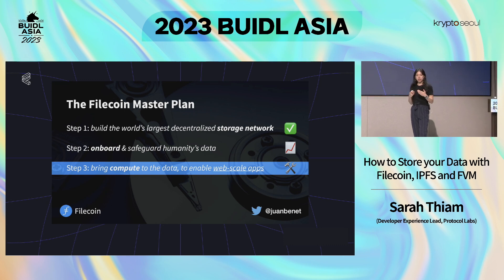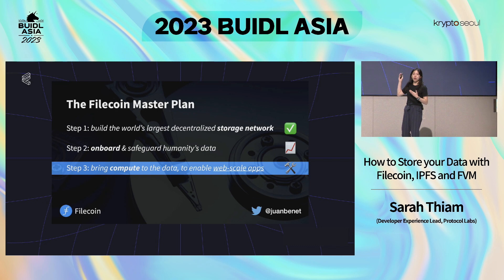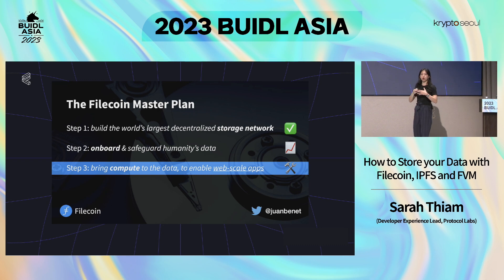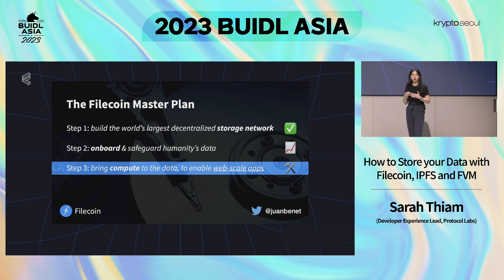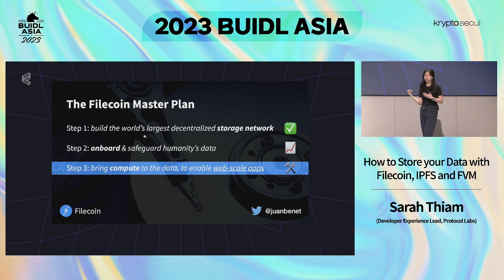So I'm going to talk a little bit about some context of what Filecoin is doing and where the FVM comes in. We have this Filecoin master plan from our founder Juan Benet. Step one was to provide a large decentralized storage network. As of today, we have 20 exabytes of committed capacity on the Filecoin network, which is one of the largest in Web3 today, with a huge supportive system of storage providers, including some here in Korea and many other parts of the world.